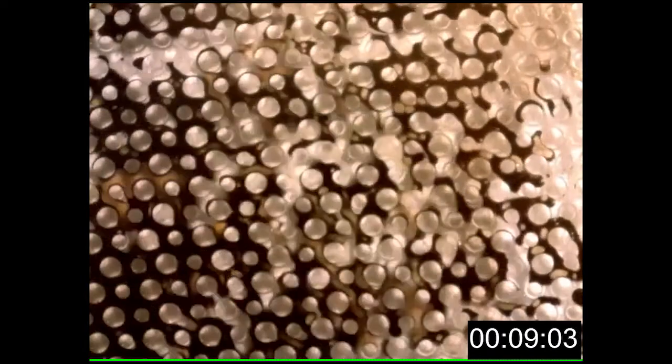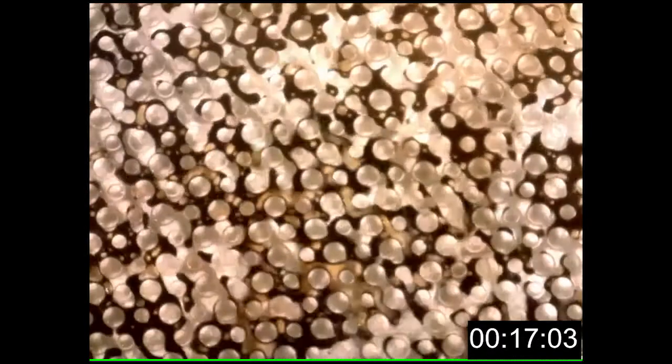Okay, so our chip started filled with Athabasca bitumen and we are now injecting steam. As the steam enters the chip, you will see the formation of emulsion. An emulsion is when one fluid that is not miscible in another forms droplets inside of the second fluid. An example you'd be familiar with is salad dressing with oil and vinegar.